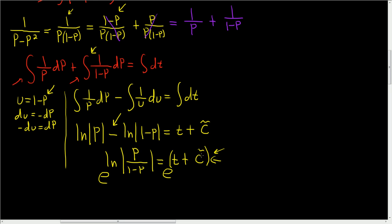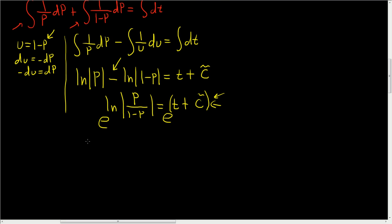So on the left-hand side, we end up with the absolute value of p over 1 minus p. That's because e to the ln x is equal to x. Boom, super powerful.